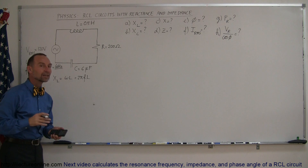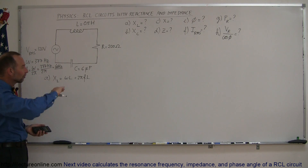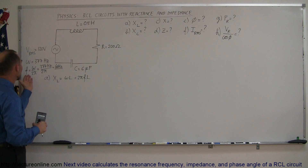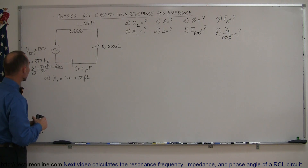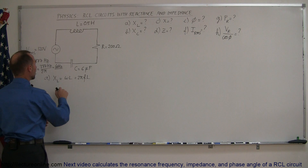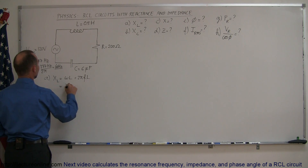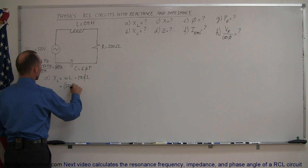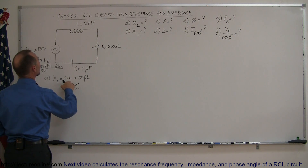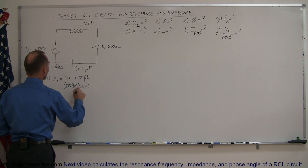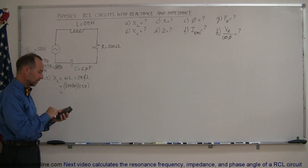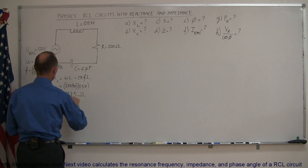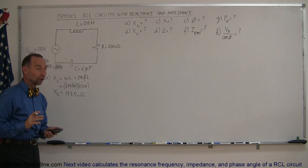So that would be the cycle frequency of the voltage — the voltage is varying 60 cycles per second, which corresponds to an angular frequency of 377 hertz. So the inductive reactance X sub L equals 377 hertz times the inductor value of 0.5 henries. So 377 times 0.5 gives us 188.5 ohms. The reactance, just like resistance, has units of ohms.